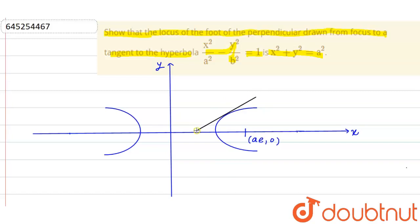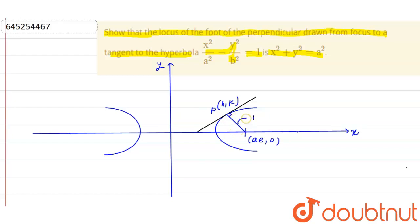Now let's say that we have a tangent on the point P. Let's say this point is H(h, k) — this is the foot of the perpendicular that we draw. This perpendicular makes a 90-degree angle with the tangent.